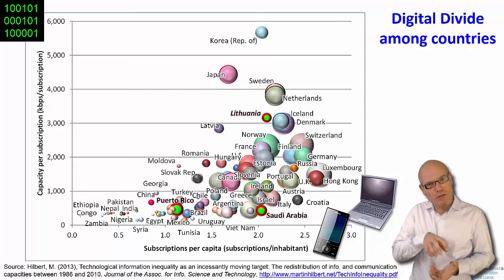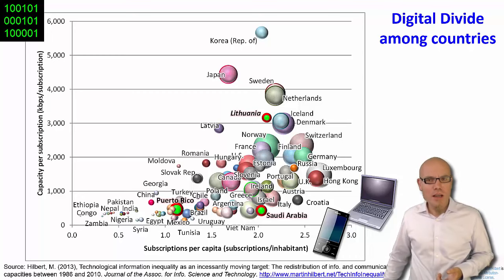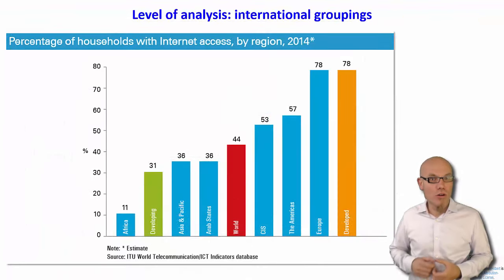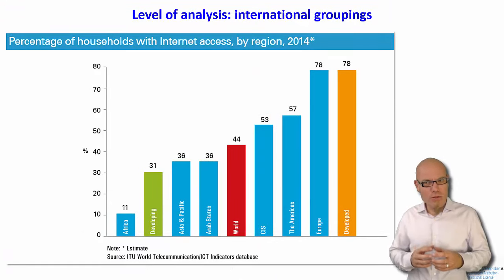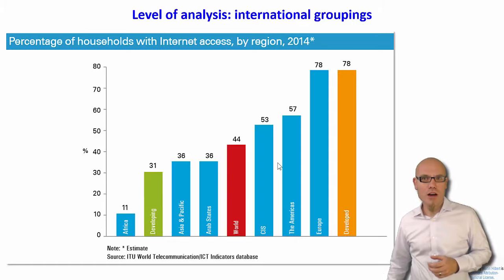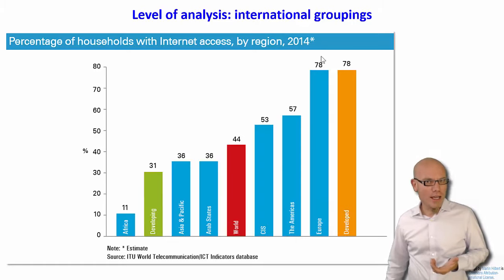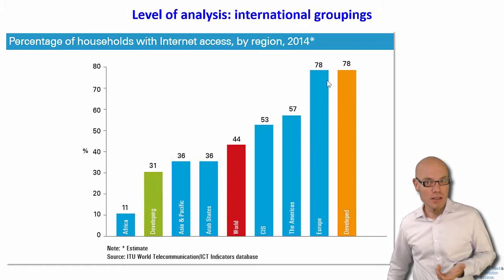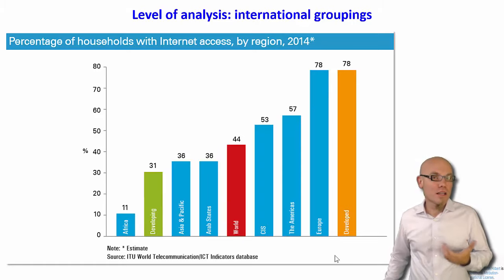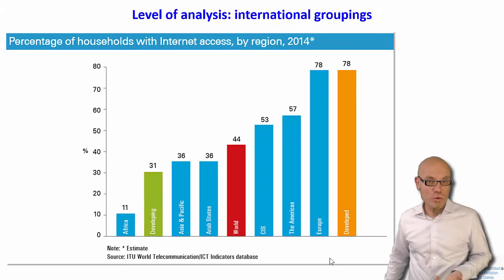We could zoom out even further at the international level and look at the divide among world regions. We group countries together that are in the same world region — here Europe has pretty high connectivity and Africa has pretty low connectivity. So we also have an international digital divide, but in this case the nodes, the subjects, are world regions.